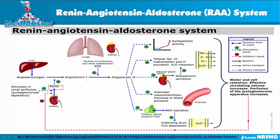When angiotensin 1 travels to the lungs through the bloodstream, an enzyme in the lungs called angiotensin converting enzyme (ACE) converts angiotensin 1 into angiotensin 2. This enzyme is really important to remember — it will help you understand ACE inhibitors.